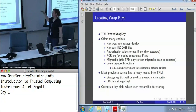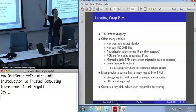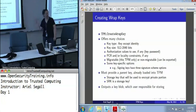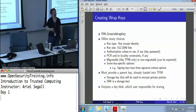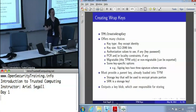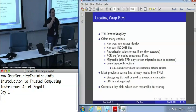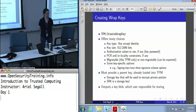You can also specify whether a key is migratable or non-migratable, and none of these options change after the key is created. You cannot update the PCR constraints on a key any more than you can change whether it's migratable or not. This means that if you update your machine in such a way that the PCRs change, you're going to have to create a new key. This is part of why having a convenient built-in certification mechanism is so important for the TPM, and it's also why PCR-locked keys are a thing to use carefully.